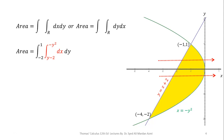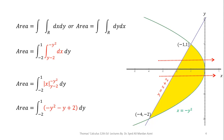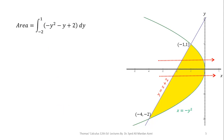In the next step we solve the inner integral. The integration of dx is x, evaluated at the given limits. Applying the Fundamental Theorem of Calculus — upper limit minus lower limit — we substitute the limits and obtain: (-y² - (y - 2)) = -y² - y + 2, integrated from y = -2 to y = 1.